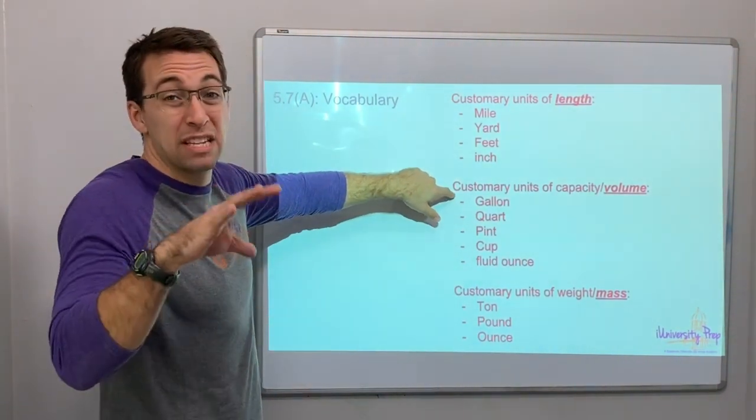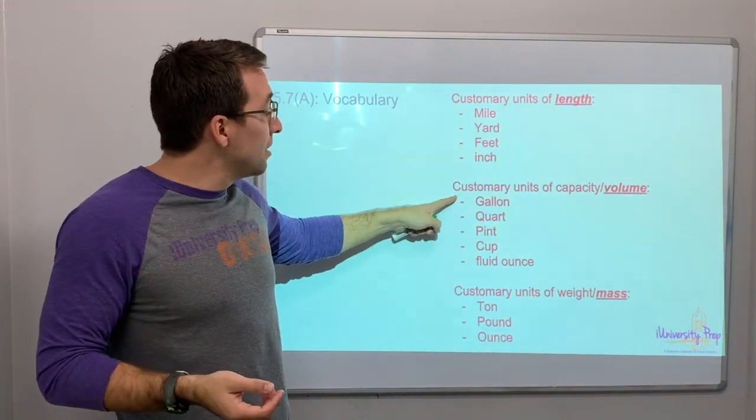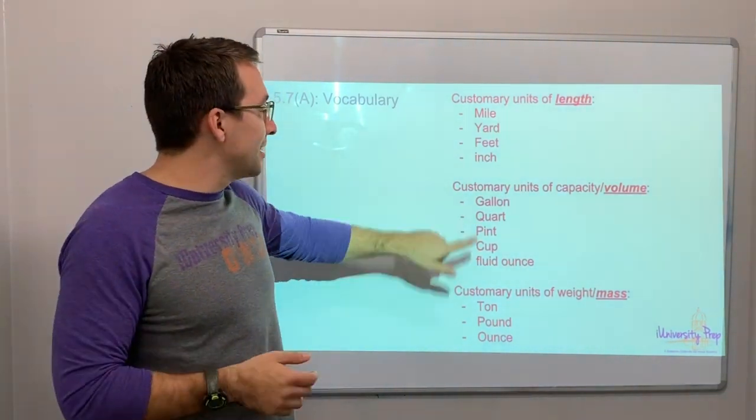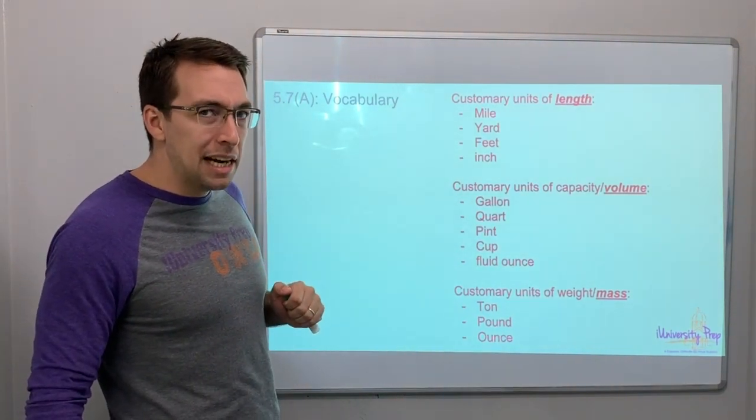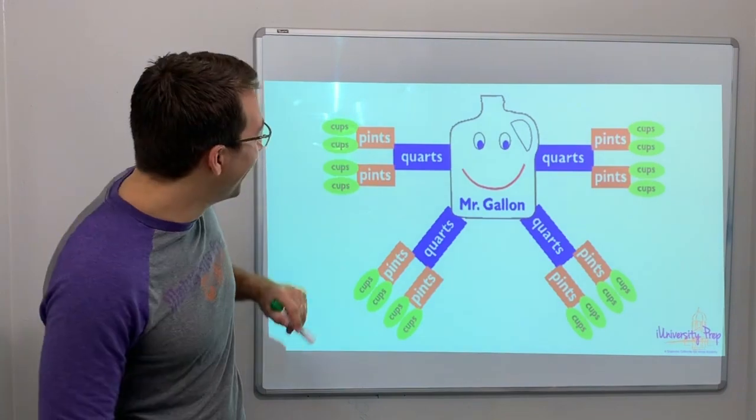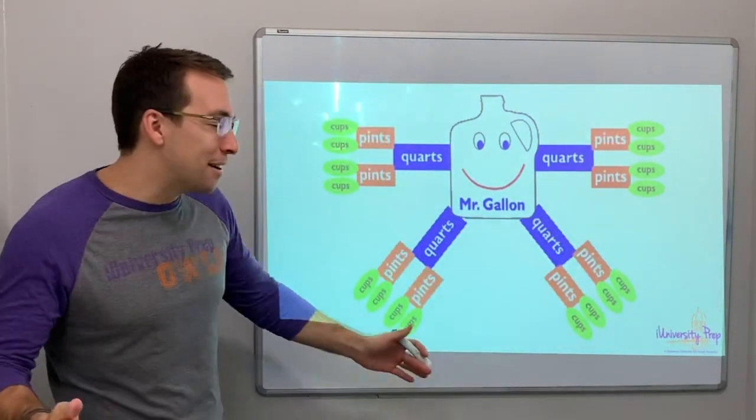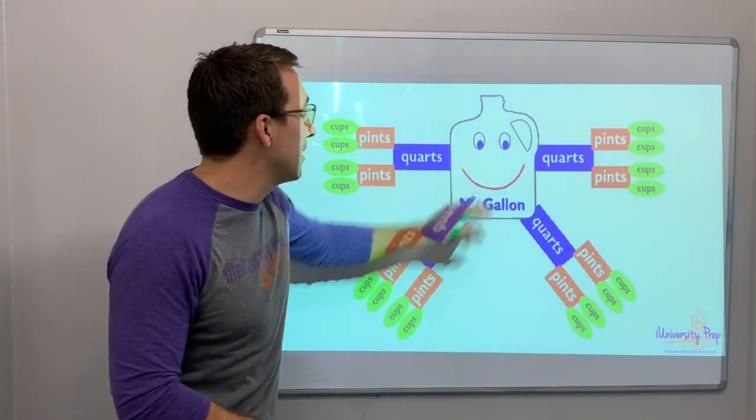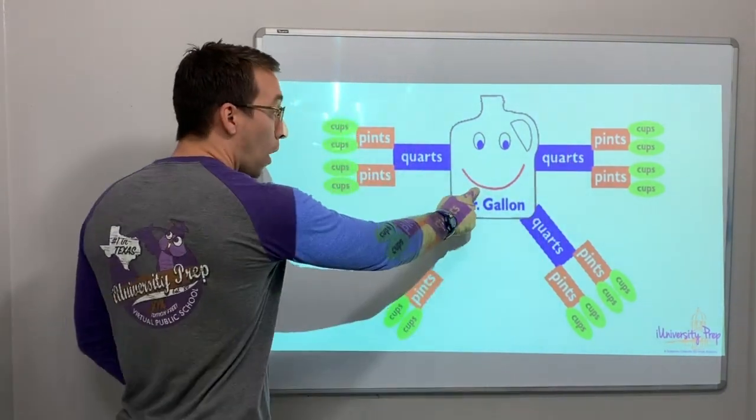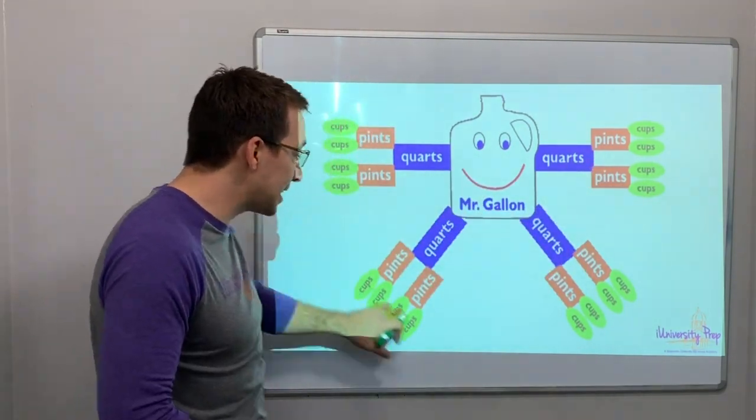And a gallon is much our biggest volume measurement. There's 4 quarts in a gallon. There's 8 pints in a gallon. There's 16 cups. So this is Gallon Man. To help you, 1 gallon has 4 quarts. 1 gallon has 8 pints. 1 gallon has 16 cups.